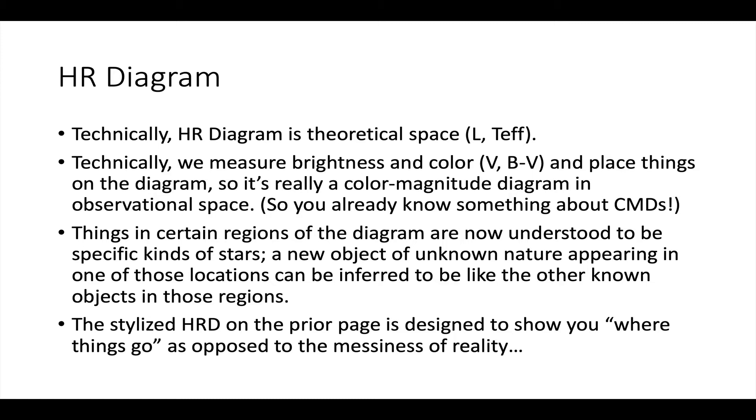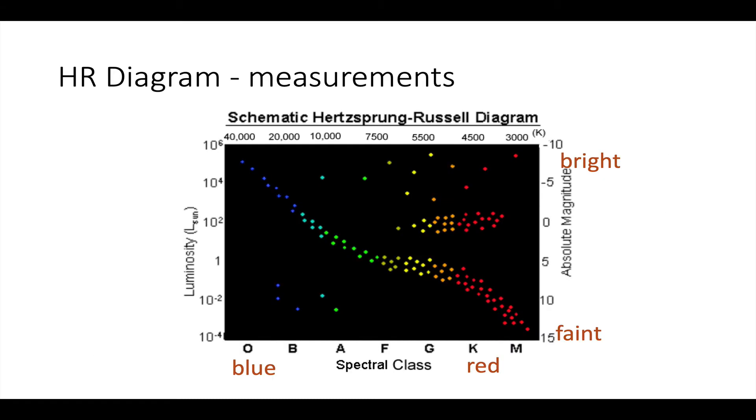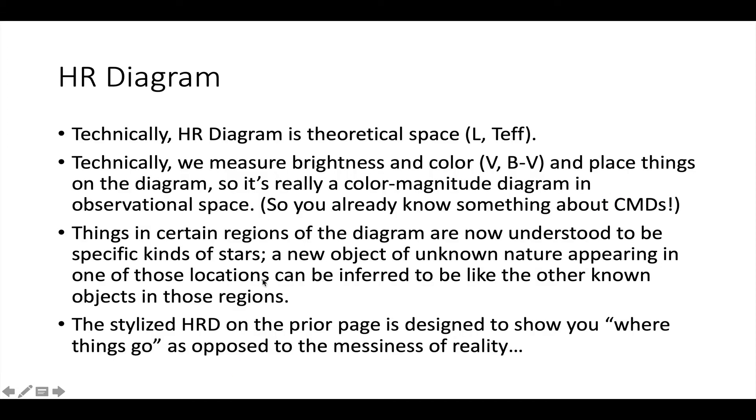The whole power of the Hertzsprung-Russell diagram or the color-magnitude diagram, the optical color-magnitude diagram, is that things in particular regions of the diagram are going to be particular kinds of stars. So if I put a new object up here and asked you what it was, you'd tell me it was a giant. If I put a new object right here and asked you what it was, you'd say it's a K star, main sequence K star. If I gave you a new object and put it down here, you'd say oh it's a white dwarf. So if you have a new object of unknown nature that is placed in that diagram, you have a guess as to what the object is.